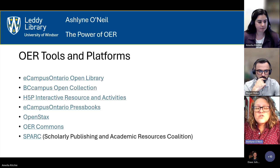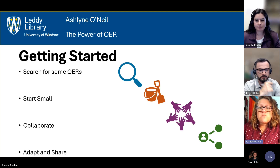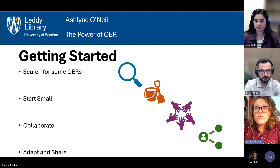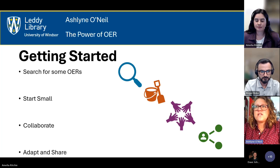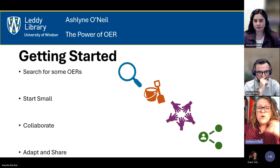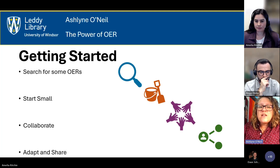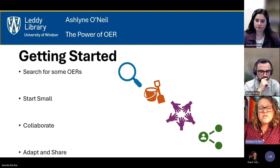To get started: first, search for OERs using those tools and look for what exists in your field. Then start small — you don't have to overhaul your whole course. Begin by replacing a few readings with open access articles or an open access novel. Then collaborate with your colleagues — one of the best things about OER is the intentional collaborations it builds. From there, you'll be able to more confidently adapt resources and share them out, even becoming an author on resources others will use.